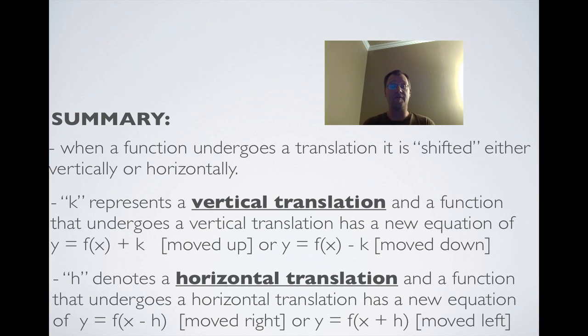The letter H denotes a horizontal translation and a function that undergoes a horizontal translation has a new equation of y equals f of x minus h when it's moved to the right or y equals f of x plus h when it's moved to the left.